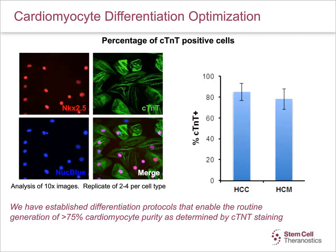This slide shows optimization of the cardiomyocyte differentiation process. We have established differentiation protocols that enable the routine generation of 75% or higher cardiomyocyte purity as determined by CTNT staining using the Thermo cardiomyocyte staining kit. The top left panel shows staining using NKX2.5, the top right panel shows cells stained positive for CTNT, and the lower panels show nuclear staining and a merged image. On the right side is a graph showing quantitation of CTNT-positive cells in control as well as HCM cardiomyocytes.